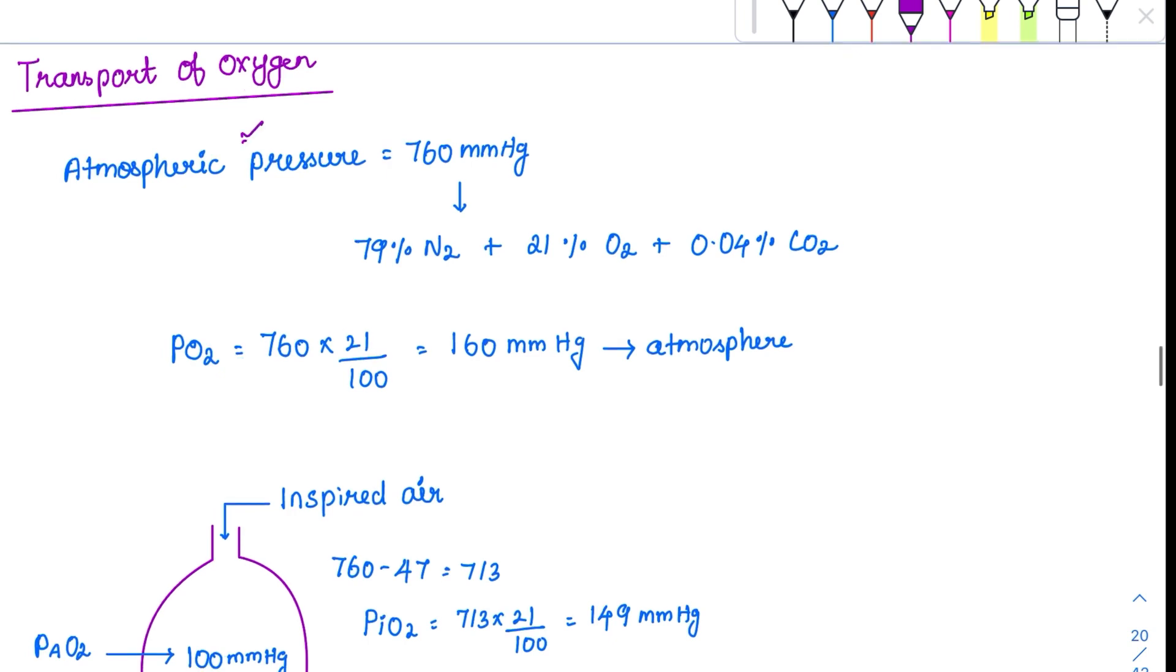So coming to the atmospheric pressure, the atmospheric pressure is around 760 mm Hg. Among these, it is contributed by the partial pressures of various gases like nitrogen causing around 79%, 21% of oxygen, and very minimal amount of carbon dioxide. So what is the partial pressure of oxygen? It is contributing 21%, so multiply 21 by 100, it gives around 160 mm Hg.